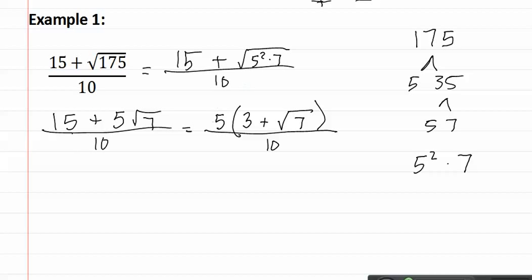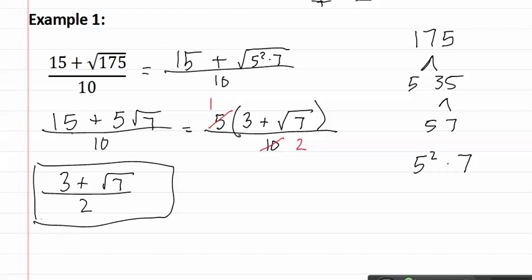Now we can reduce. Five goes into five once, and five goes into ten twice. This leaves us with three plus square root seven over two. This is our final answer. Let's look at another example below.